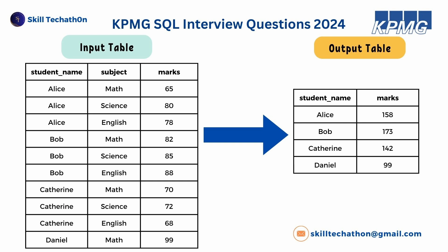For Alice, the total marks is 158 — her highest 2 subjects are Science (80) and English (78), totaling 158. For Bob, the highest are 88 in Science and 85 in English, totaling 173. For Catherine, the highest are 70 in Math and 72 in Science, totaling 142. For Daniel, there is only one subject, so the total is 99. This is how we need to find the output — the sum of marks for the top 2 subjects per student.